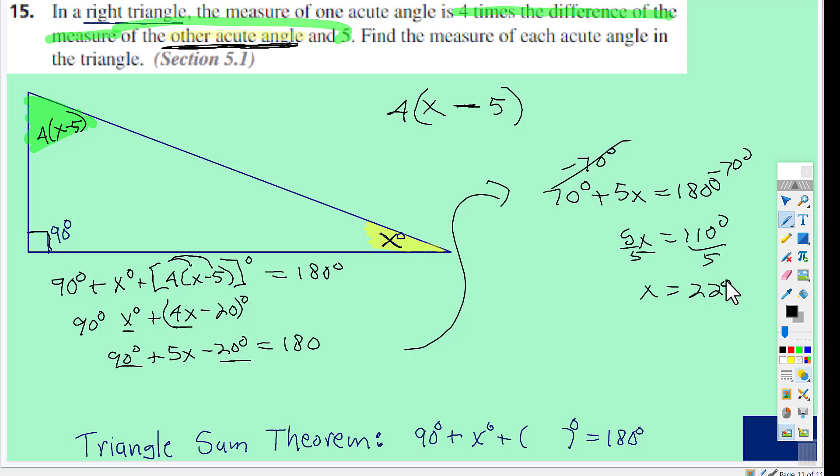And let's see if that makes sense. If this is 22 degrees, then 4 times, well, 22 degrees subtract 5 is 17. 4 times 17 is 68 degrees.